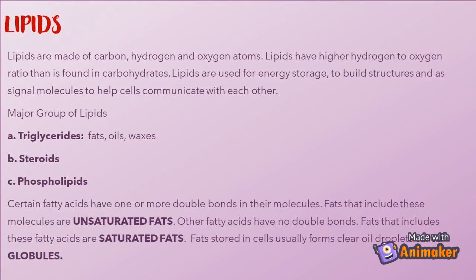Lipids are made of carbon, hydrogen, and oxygen atoms. Lipids have a higher hydrogen-to-oxygen ratio than is found in carbohydrates. Lipids are used for energy storage, to build structures, and as signal molecules to help cells communicate with each other.